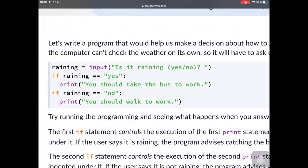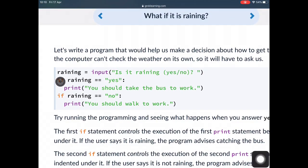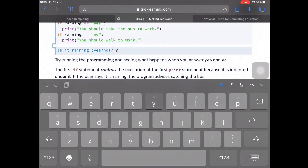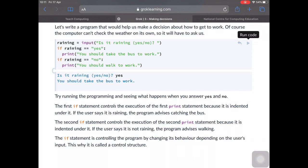So here it is in code. At the top there, you can see this is like you've done before. Raining equals input, is it raining yes or no. So there's a variable called raining and you're asking somebody to input. Then you're going to check to say if that variable raining is yes, it should say you should take the bus to work. But if raining, the variable equals no, you should walk to work. So if they typed in no, that's gone into raining and walk to work. Here we are typing in yes, so we should get you should take the bus to work. And that works.